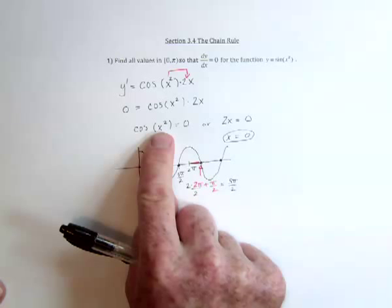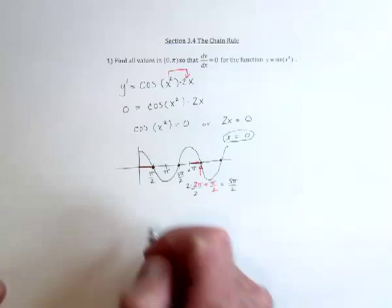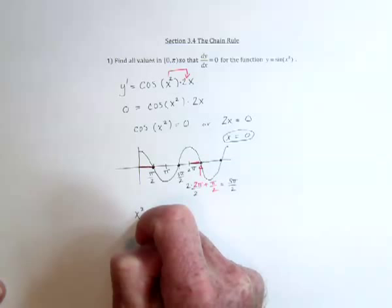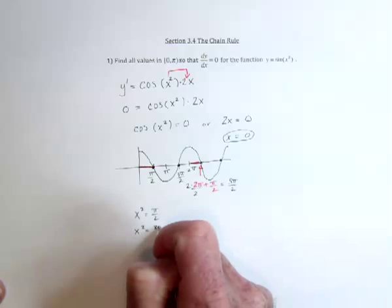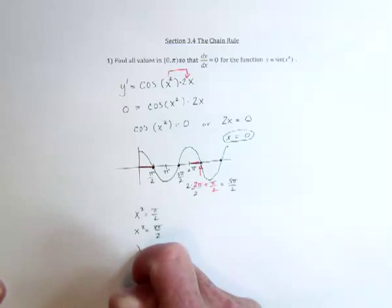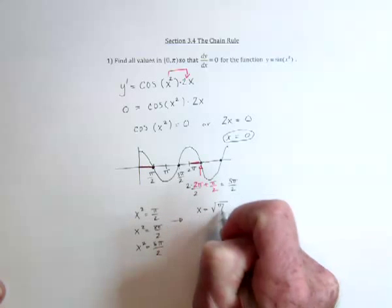Now keep in mind, all of that is for what x squared equals. So we're going to have x squared equals pi over two. And x squared equals three pi over two. And x squared equals five pi over two. So x is equal to the square root of that.